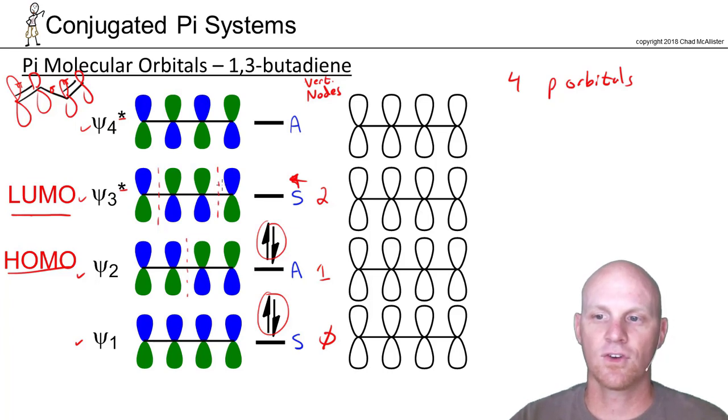So if you notice here, we've got two nodes and then only one anti-node. So you have more anti-bonding interactions than you do bonding. And that's why overall it ends up being an anti-bonding molecular orbital.